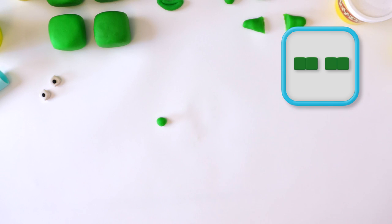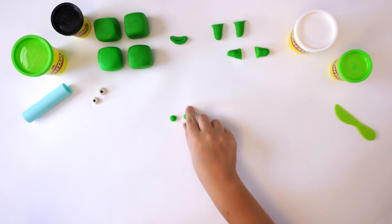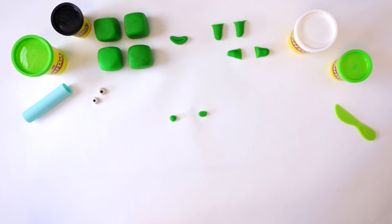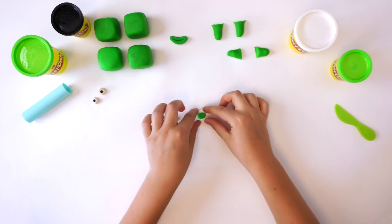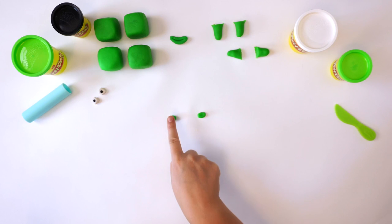Time for the eyebrows. To make the large eyebrows, take a dark green Play-Doh compound and roll two small worms. Flatten with your thumb and flatten off the edges.